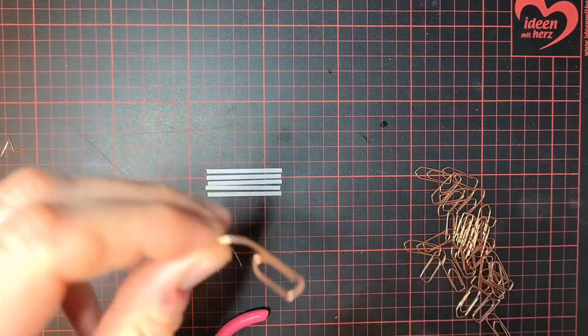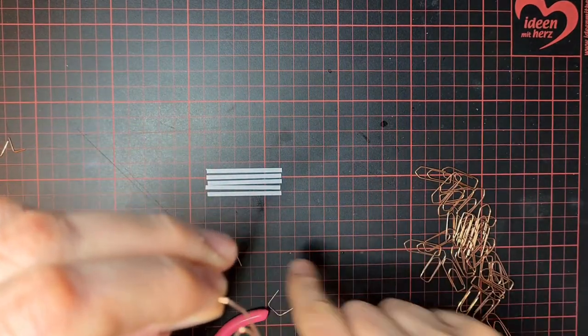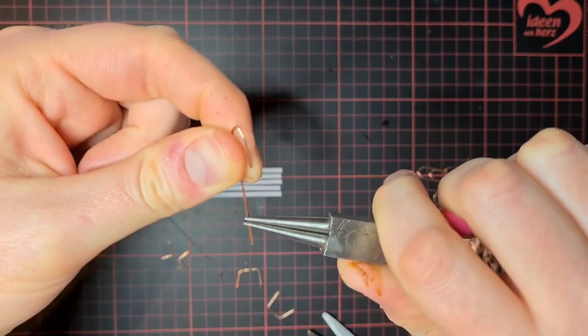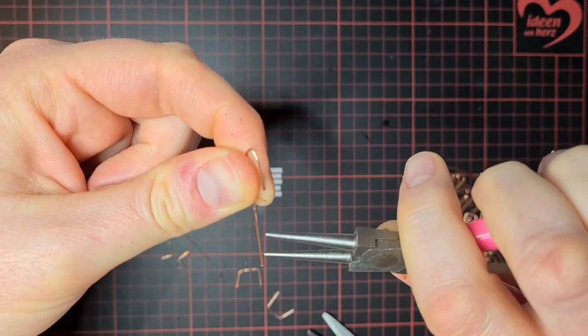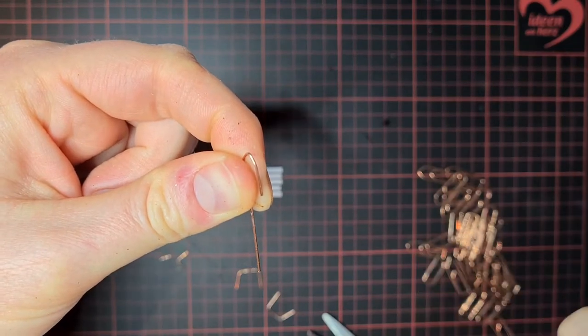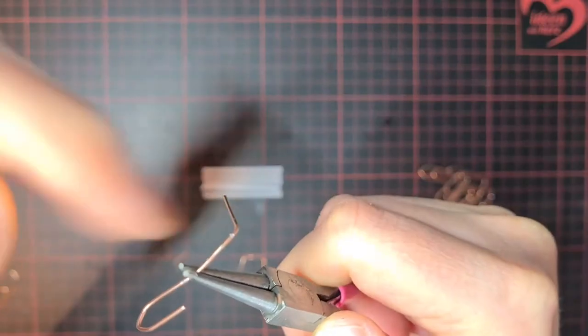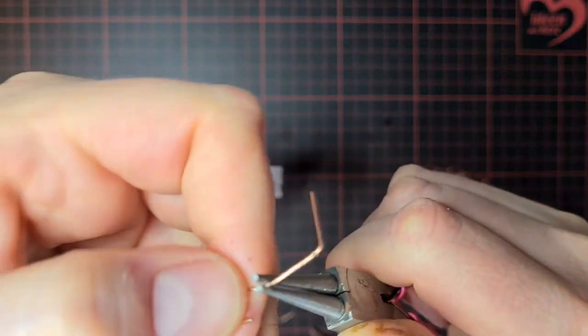To bend the next part, first I'll cut off up here until the wire is more or less straight. One centimeter from the bottom we make a nearly 90 degree angle, like this. And then 1.3 centimeters in this direction.